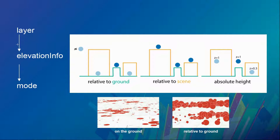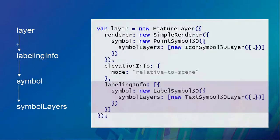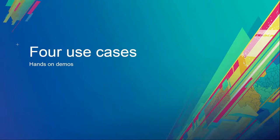Another mode is 'on the ground,' which drapes your graphics on the terrain, creating an image draped over it. Also, if you want to label your features, you use labeling info — a Label Symbol 3D where you pass in a text symbol layer. That's the basic structure for working with renderers and symbols, and now we'll move on to hands-on demo use cases.